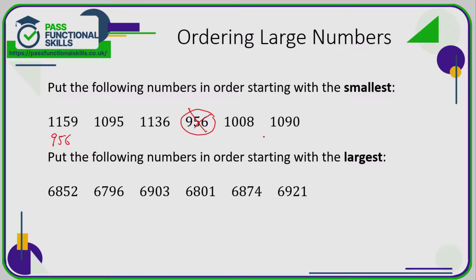The other numbers all begin with a one, so just from that first column we can't tell which is largest or smallest — we need to look at the next column. We've got a one, zero, one, zero, zero. Zero is less than one, so we need to be comparing the ones that begin with one zero.